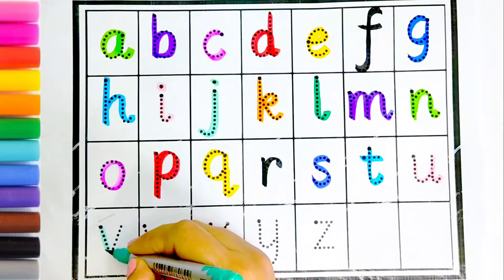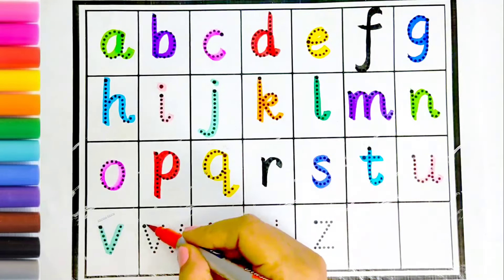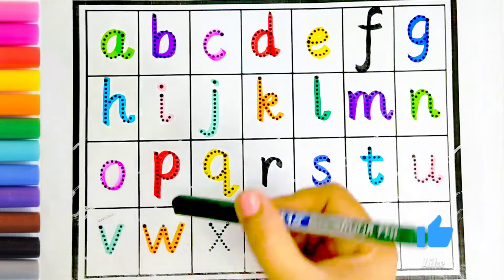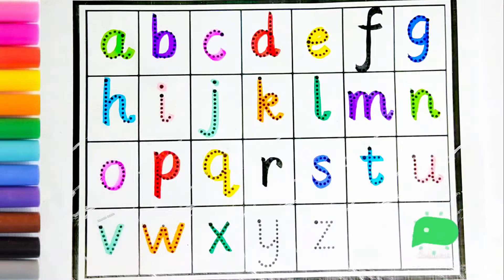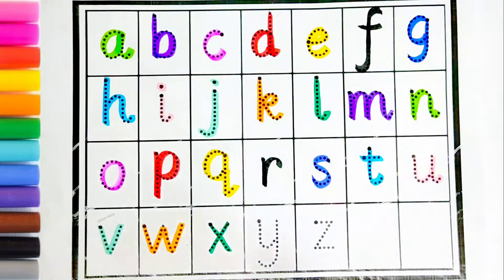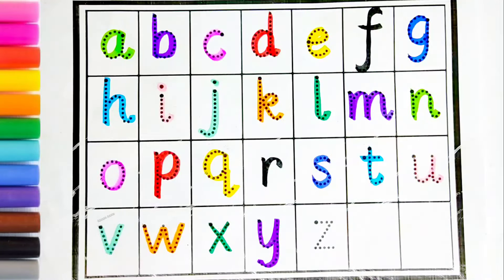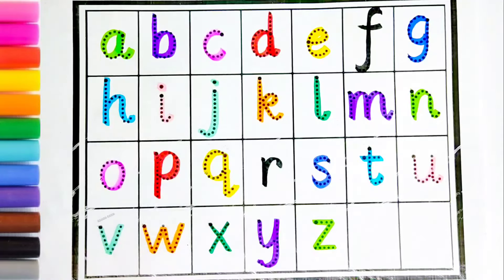V, V for van, orange color. W, W for watch, dark green color. X, X for fox, purple color. Y, Y for yo-yo, light green color. Z, Z for zebra.